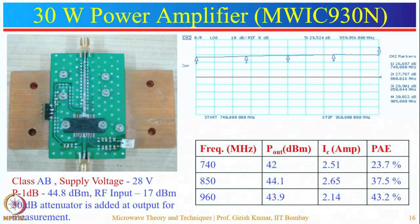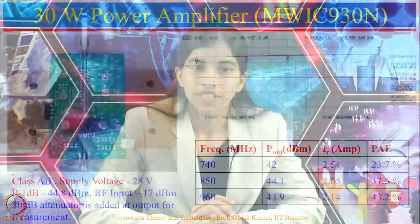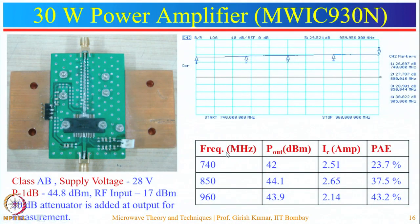The 1 dB compression point for the 30 watt amplifier is 44.8 dBm, with an RF input of 17 dBm. A 30 dB attenuator is connected at the output due to instrument measurement limitations. Accounting for this, the output power achieved is around 44.1 dBm, with a current draw of 2.6 amperes and efficiency of approximately 40 percent.